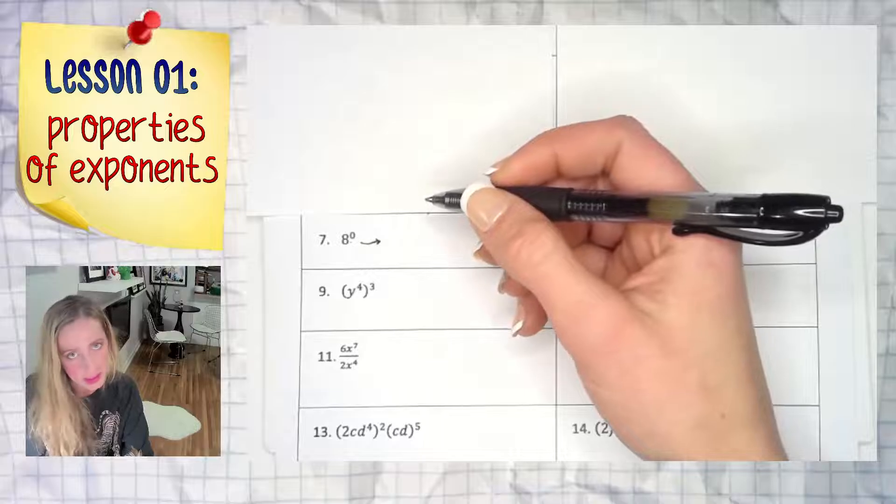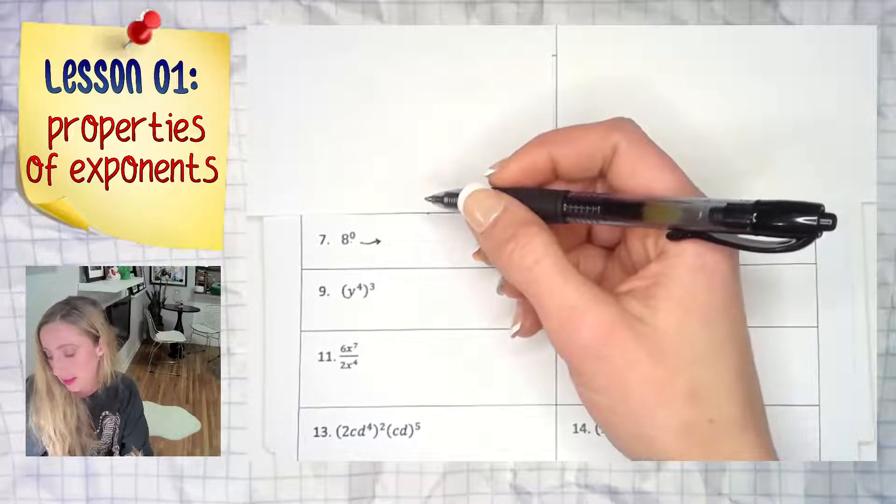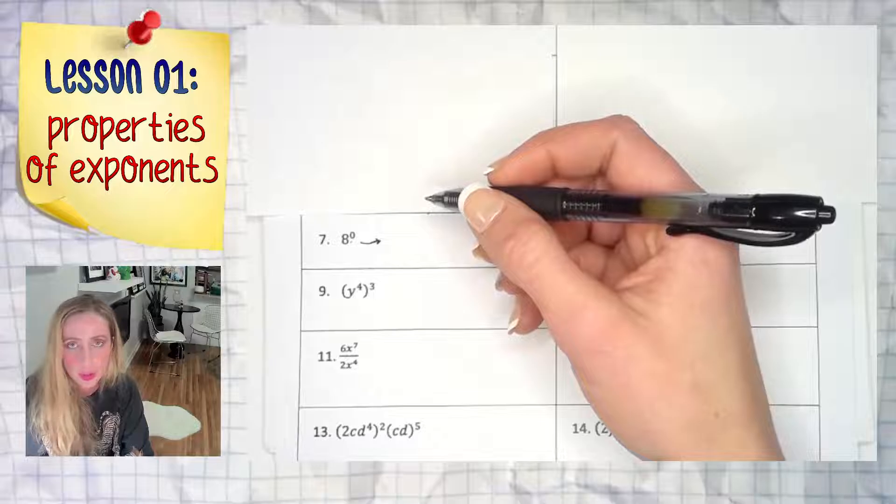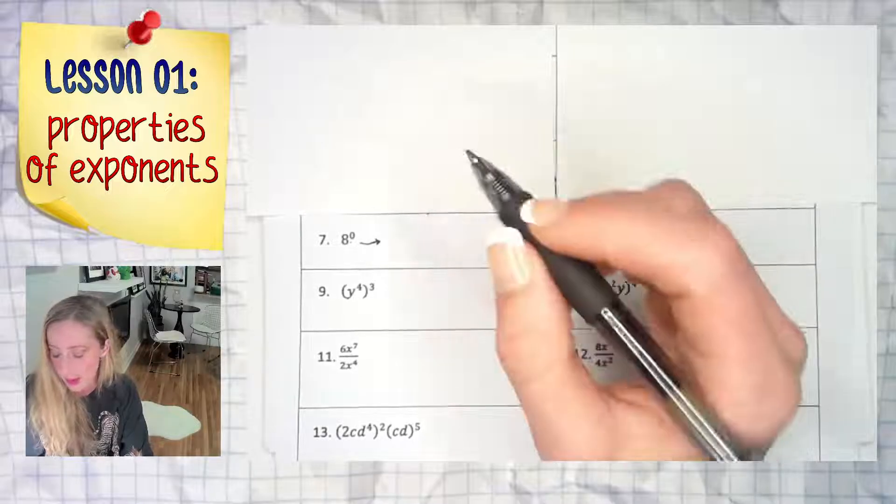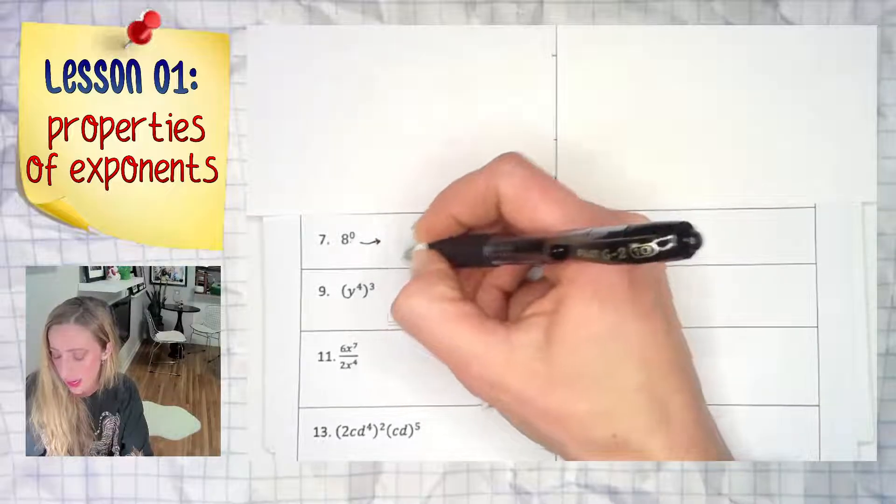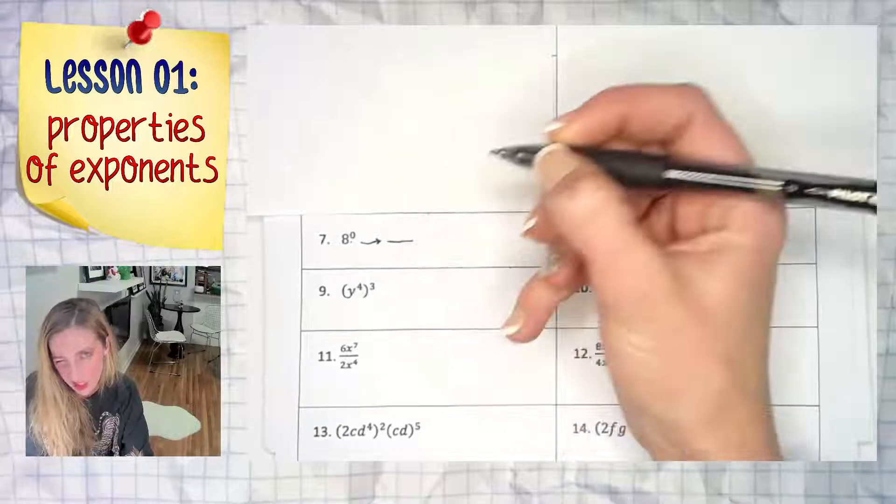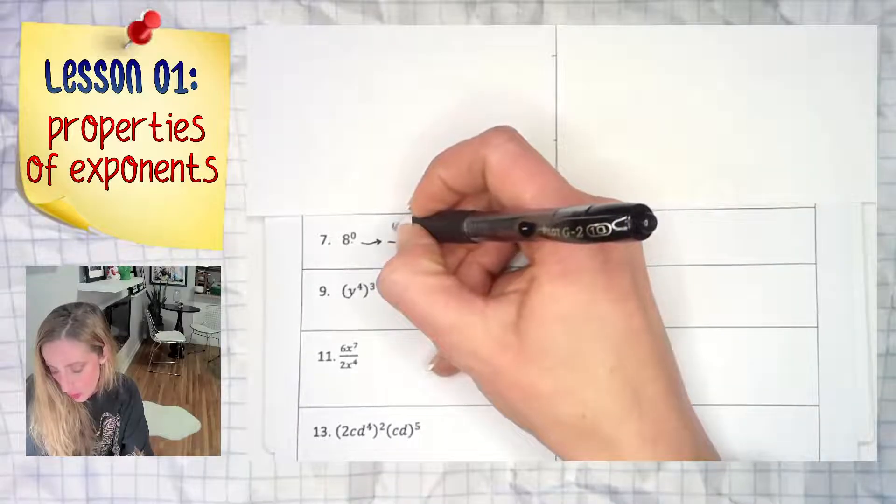Well, you could memorize it and know the answer right off the bat, or if you forget, here's a way to figure it out. What if you had 8 to the second over 8 to the second?